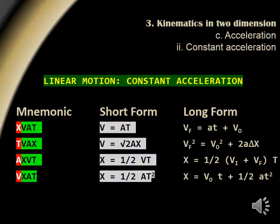Another way to remember three of the four is VAT, VACS, and TAX. In many cases on the MCAT, the initial velocity is 0, and the short form can be used.